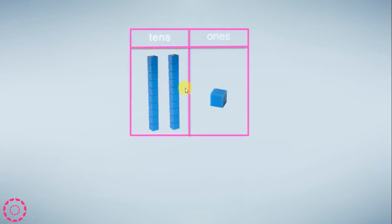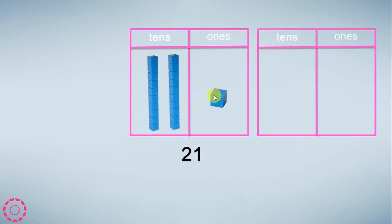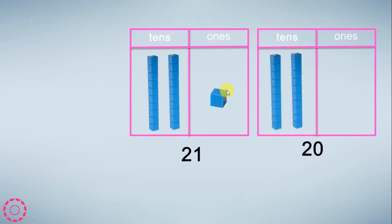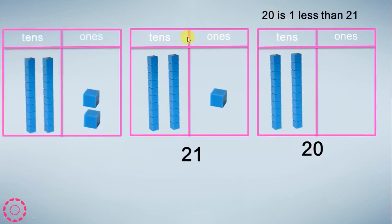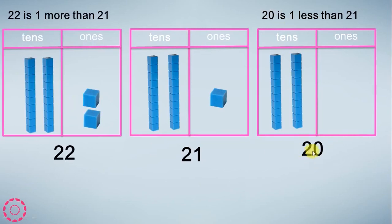This is the tens. We have 21: 10, 20, 20 plus 1 equals 21. 20 is 1 less than 21. And 22 is 1 more than 21. So 20 is 1 less than 21 and 22 is 1 more than 21.